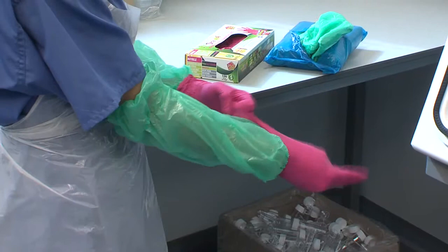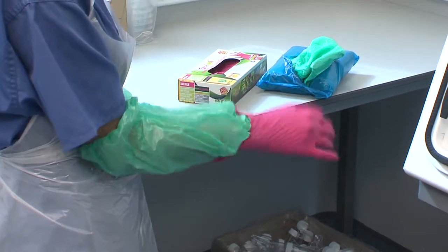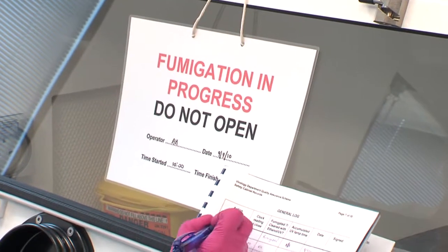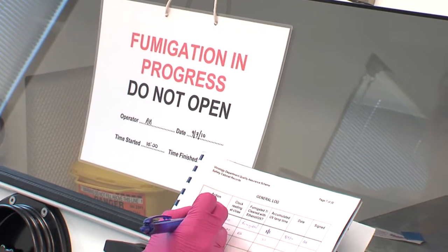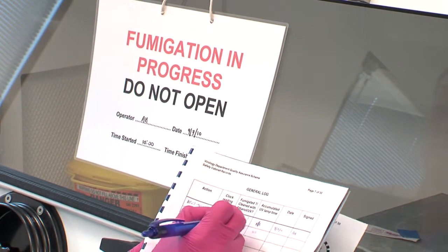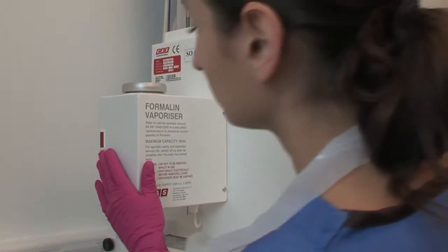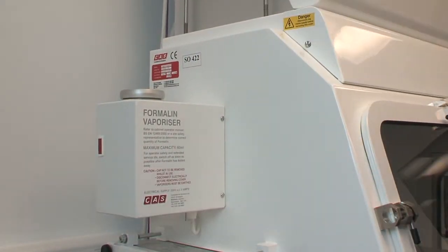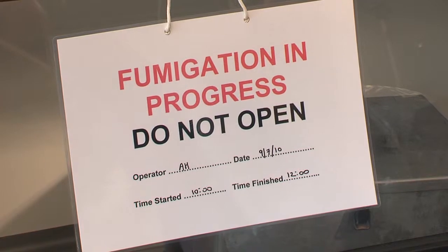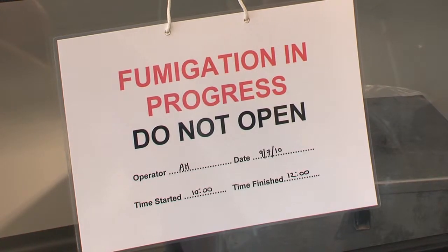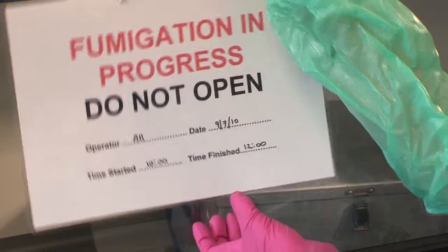When opening up a cabinet, there are a number of checks to go through. The logbook should be checked and filled in. Where appropriate, staff must check the fumigation unit is turned off. The fumigation indicator must be checked to make sure the fumigation cycle was successful.